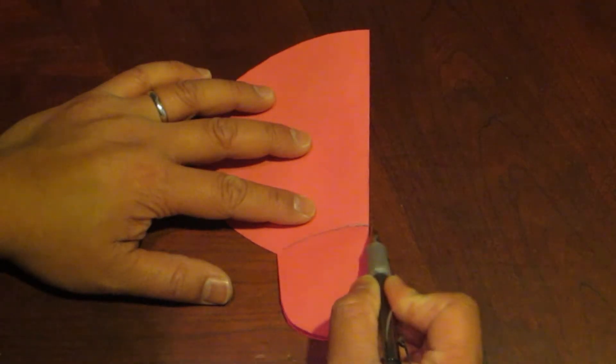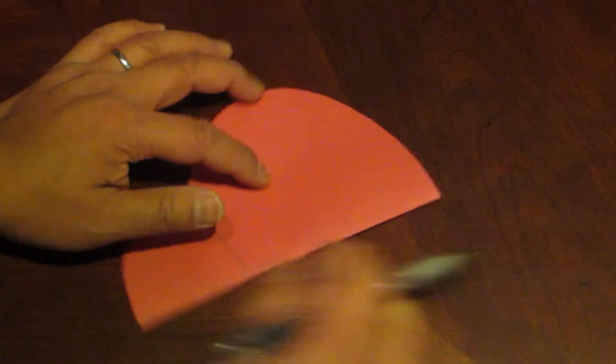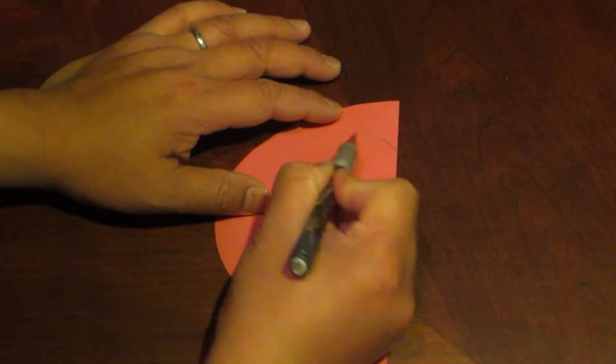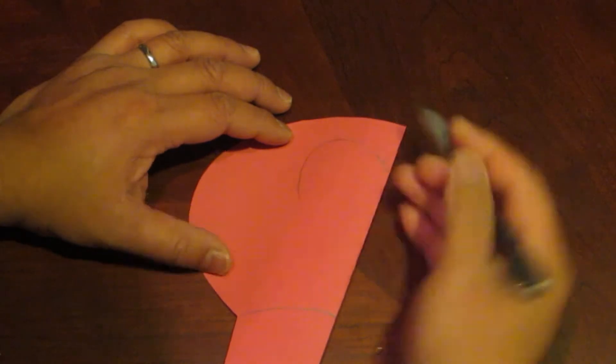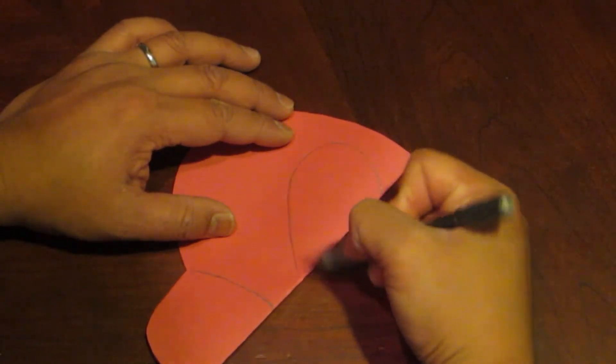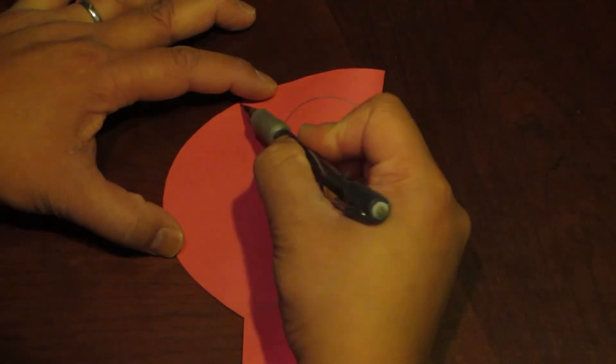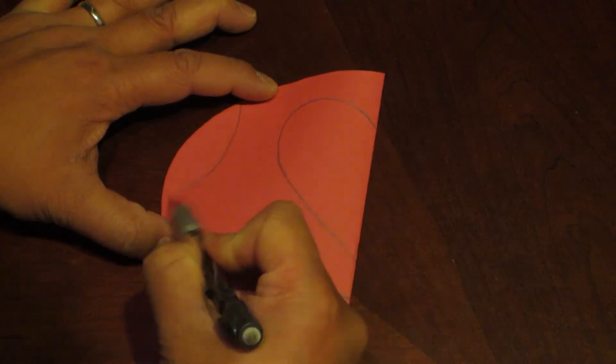One curved line from the fold here. Next draw half of a heart like this on the fold. Then draw a side half oval section like this.